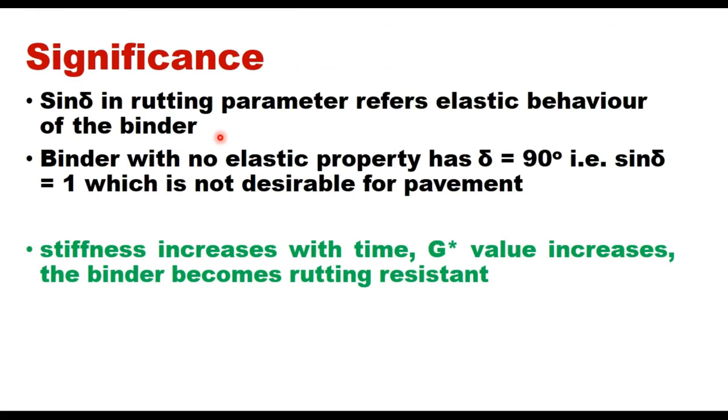The significance of this test is that sin(δ) in rutting parameter refers to elastic behavior of the binder. For a truly elastic material, delta is 0. That basically indicates the time lag between the applied stress and resulting strain. For truly plastic material it will be 90 degrees. So binder with no elastic property has δ = 90 degrees, that is sin(δ) will be 1, which is not desirable for the pavement.